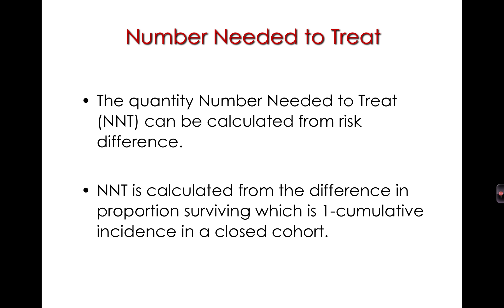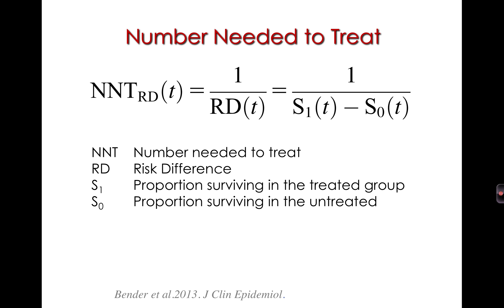Another measure shown in studies sometimes is the number needed to treat. The number needed to treat is very closely related to the risk difference — it is calculated from the risk difference, specifically from the difference in proportion surviving. In a closed cohort, that proportion surviving is one minus the cumulative incidence.